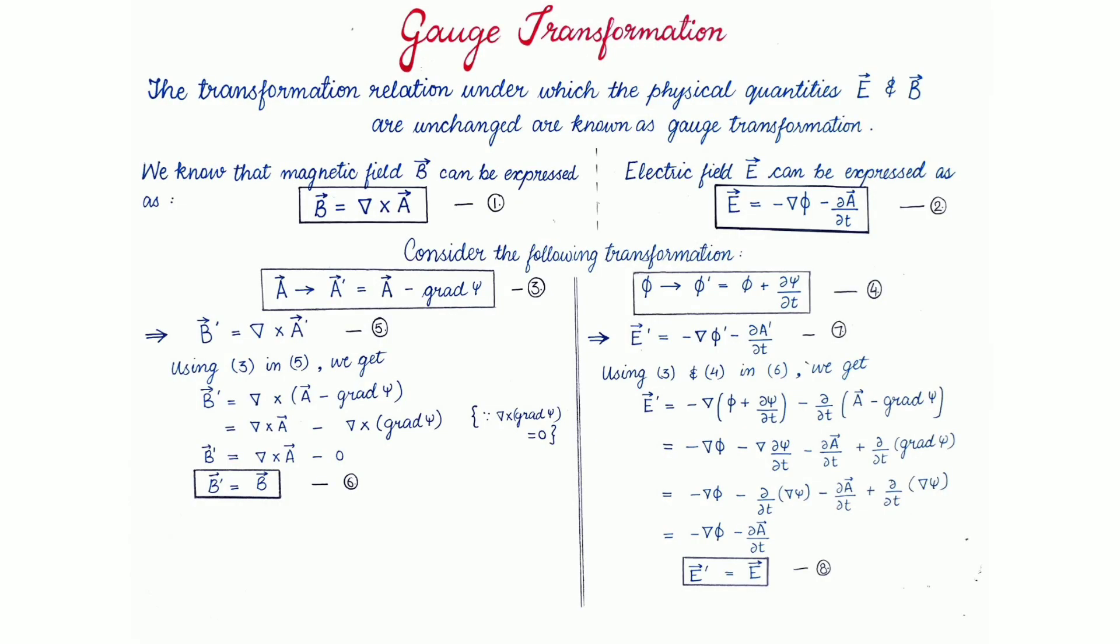We know that we represent magnetic field by B and electric field by E and these are the two expressions for them. B, that is magnetic field, is written as del cross A and we know that A is the vector potential. Similarly, for E, we write electric field as minus del phi minus curly A by curly t. Here in the electric field, we use both the scalar potential and the vector potential. Here, phi is the scalar potential and A is the vector potential.